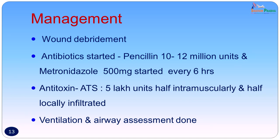The patient was admitted to the ward; wound debridement of the wound on the arm was done; antibiotics were started — penicillin 10 to 12 million units and metronidazole 500 mg every 6 hours. Antitoxin was given as therapy: 5 lakh units, half intramuscularly and half locally infiltrated. Since this patient was presenting with local tetanus, ventilation and airway assessment was done, but the patient was not intubated — only observed.